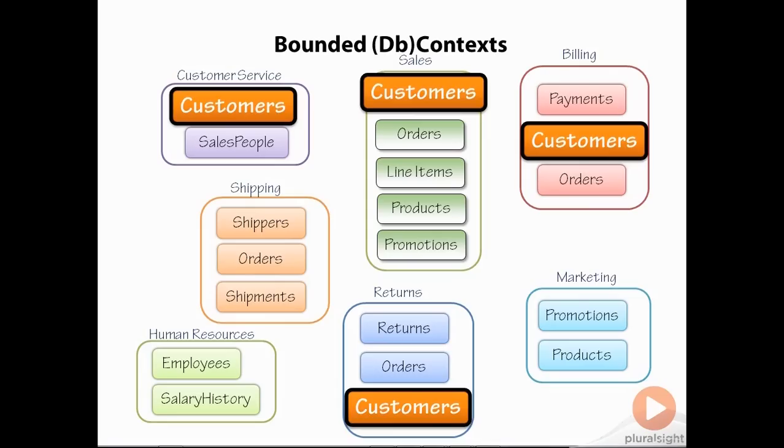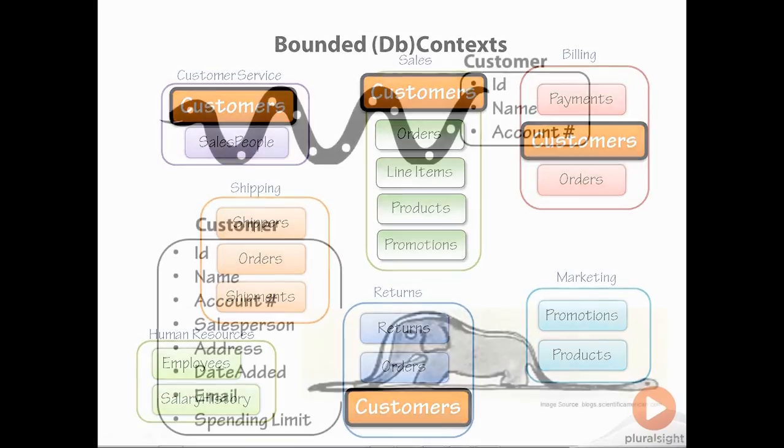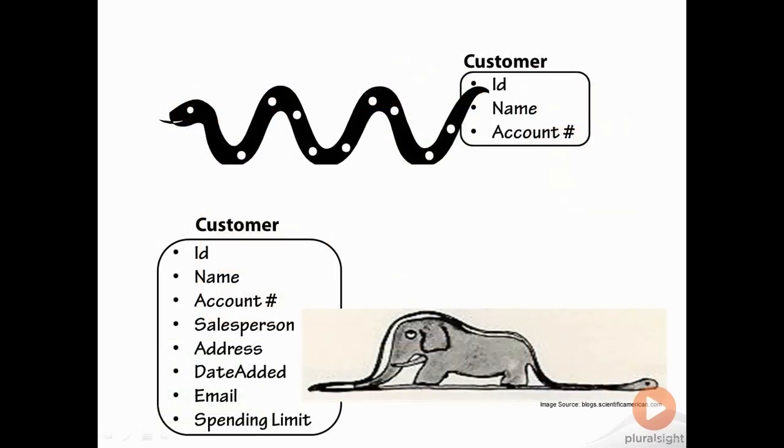This will be defined by the domain. Maybe at the company that this application is for return processing only requires that the user see the customer name and account number and a few details for processing a credit. But they don't need to see lots of detailed data about that customer.